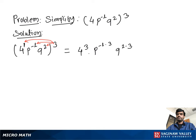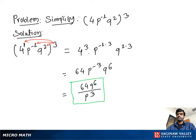We get 4 cubed which is 64, and p to the negative 3 times q to the positive 6. To make the power of p positive, we move p to the bottom, so we write 64q to the positive 6 over p to the positive 3.